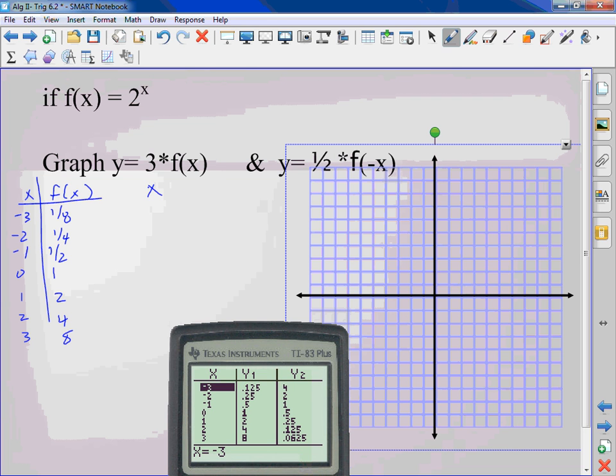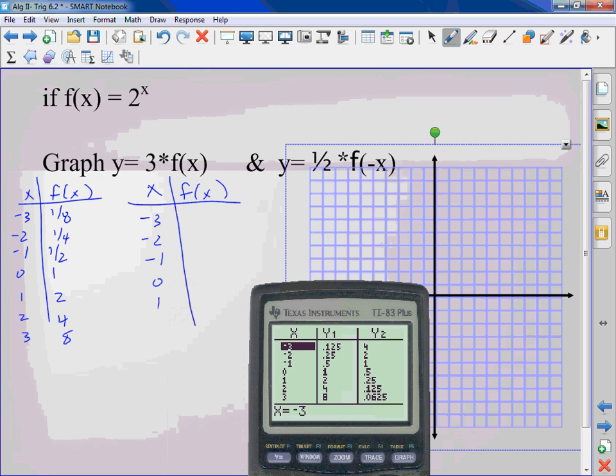Okay. For this, I'm just showing you. For the second one. Negative 3, negative 2, negative 1, 0, 1, 2, 3.